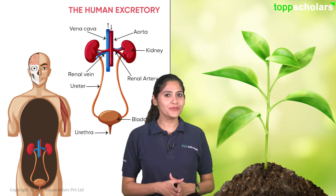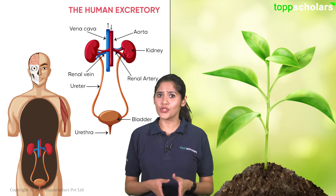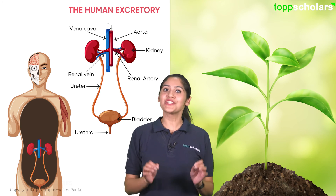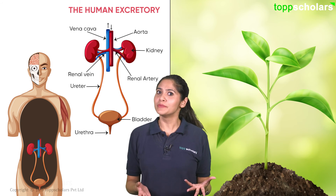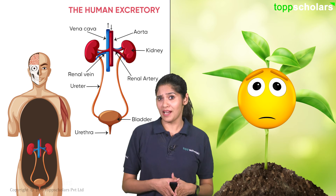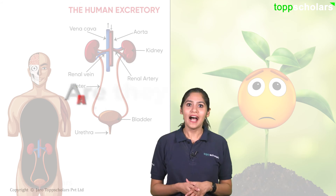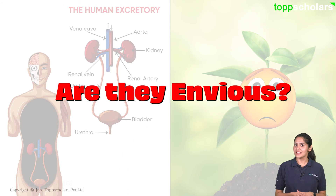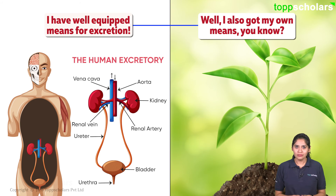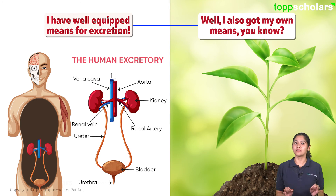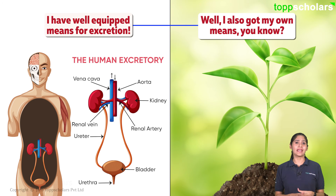Hey friends, we are back with another topic at hand. Can you guess it from the contents on the screen? Well, it shows a human excretory system while plants have a sad and blank look. Are they envious? Well, certainly not — they might not have a proper excretory system, but they do have various mechanisms to eliminate their metabolic waste.